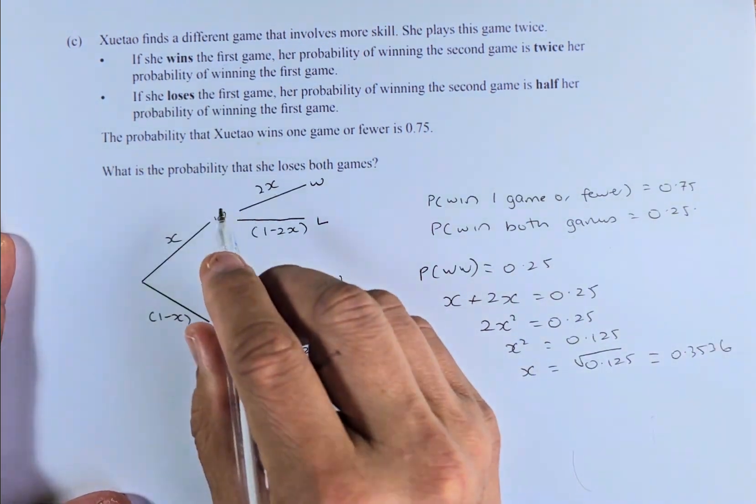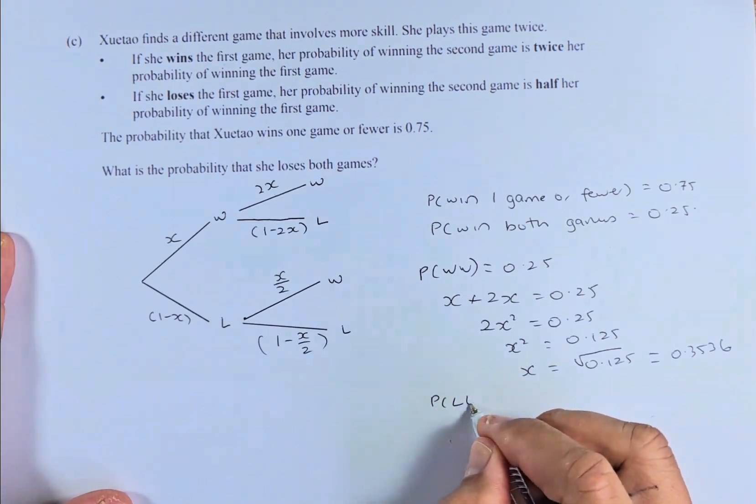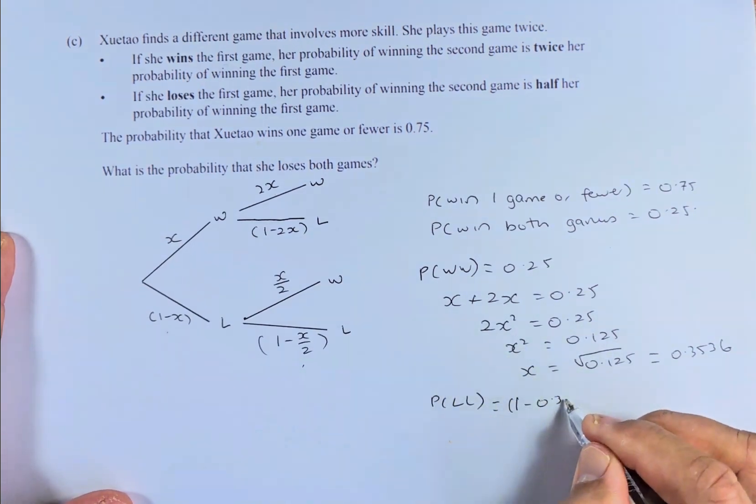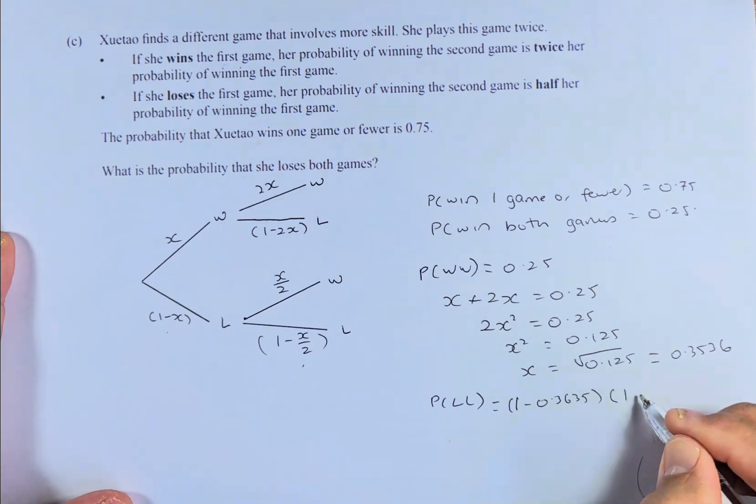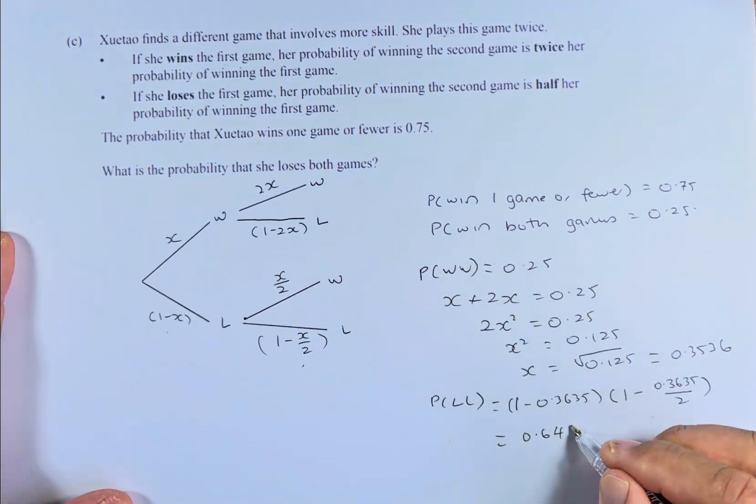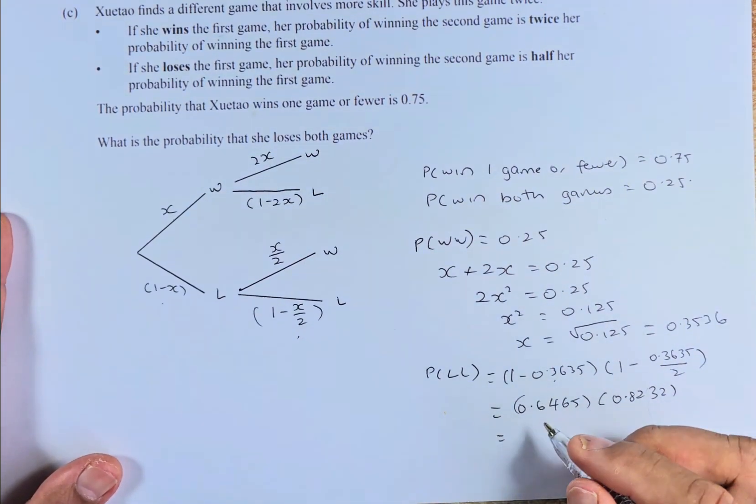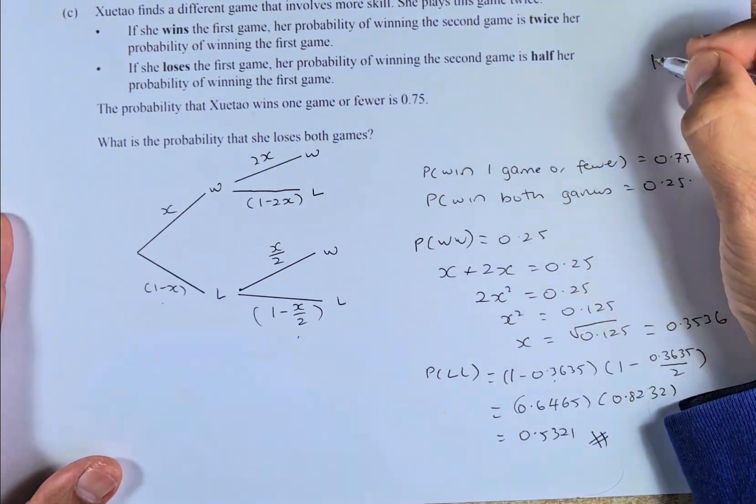The question asks, what is the probability they lose both games? So probability of lose-lose is going to be this number times that number, equals 1 minus 0.3635, bracket, 1 minus 0.3635 over 2. Put in your calculator, we get 0.6465 for this part, and the second part is 0.8232. Of course, you need to bring your calculator in. Calculate it and it's going to be 0.5321, an answer that will give you an excellence in this paper.